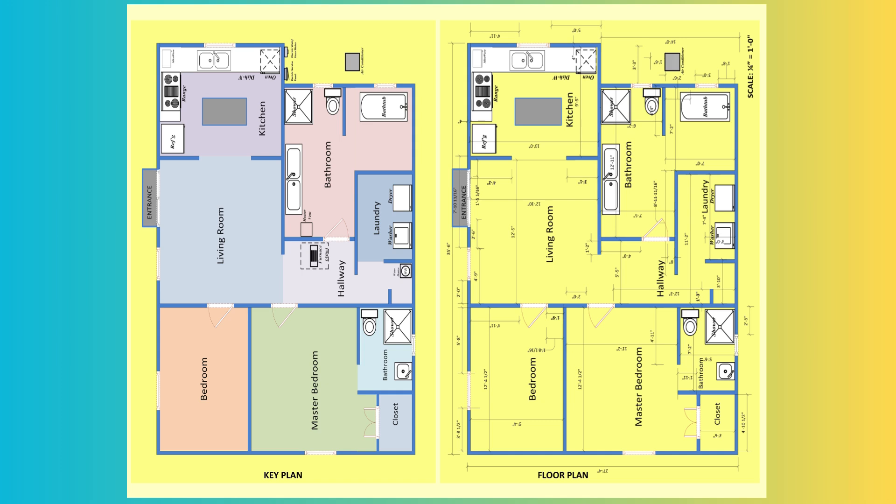The key plan, shown in the left panel, is a simplified, color-coded representation of the property layout that highlights key areas of the house, including the kitchen, living room, bedroom, master bedroom, bathroom, hallway, laundry area, and closet. Rooms are labeled for clarity, and general positioning is shown without detailed dimensions. Features such as appliances, sinks, bathtubs, and doors are illustrated for reference.